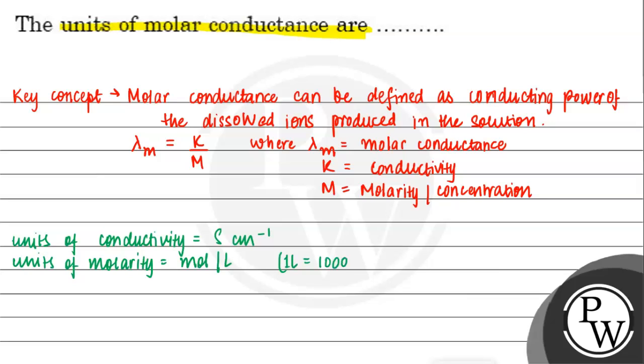We will put these units into the formula of molar conductivity. Units of molar conductance will be siemens cm inverse divided by mol centimeter to the power minus 3, which will be equal to siemens cm square mol inverse.